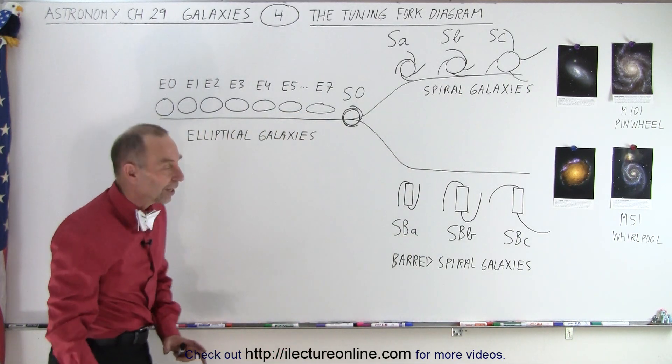Of course that's not what we use it for here, but what we can do is place the elliptical galaxies on the stem, the spiral galaxies on one of the prongs, and then the barred spiral galaxies on the other side.